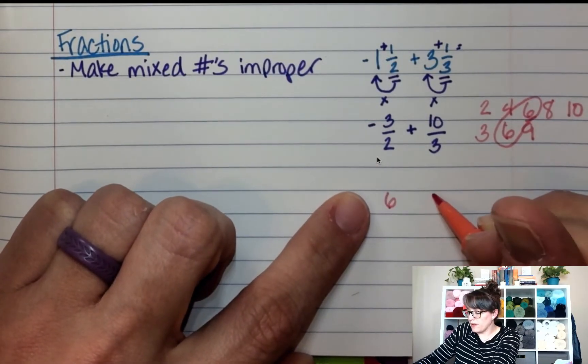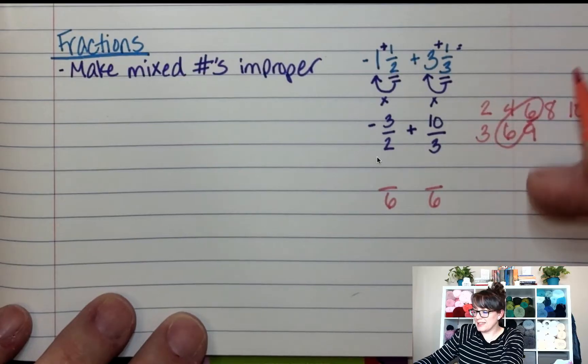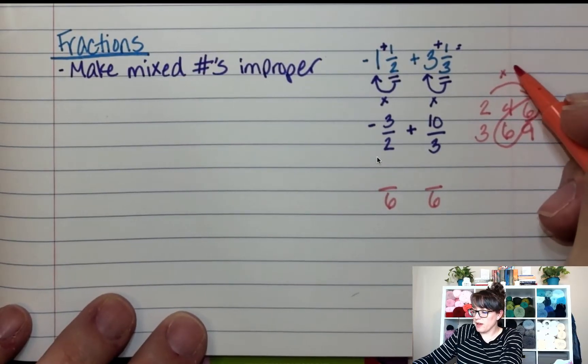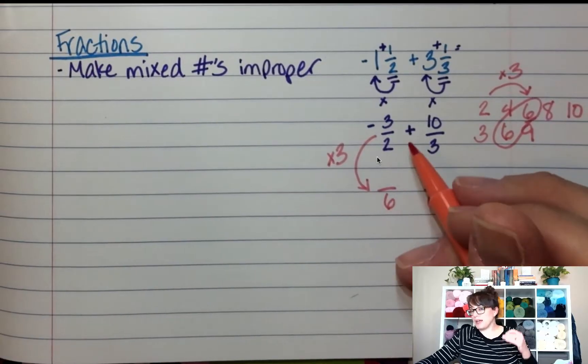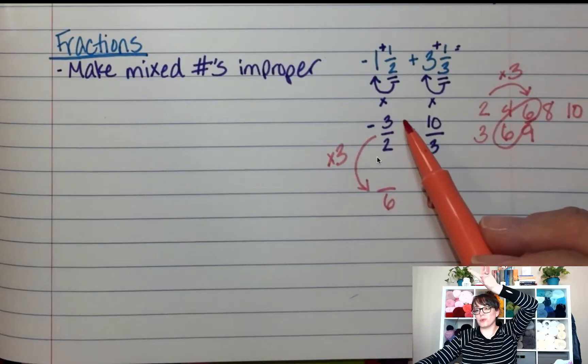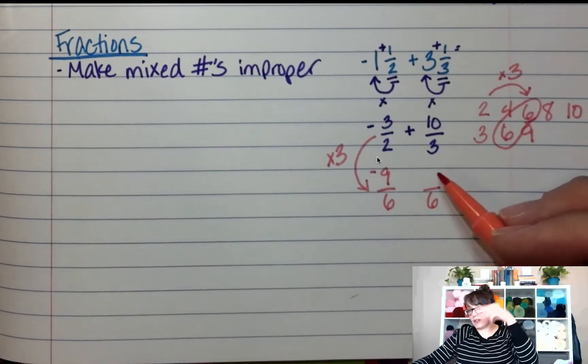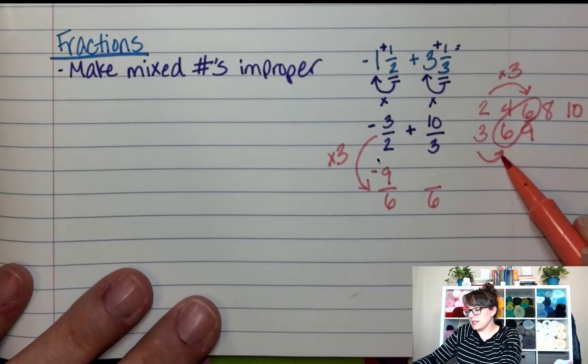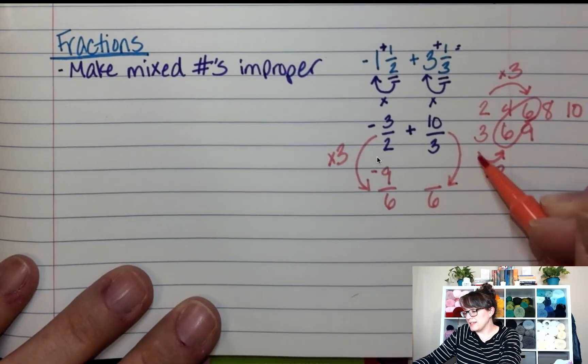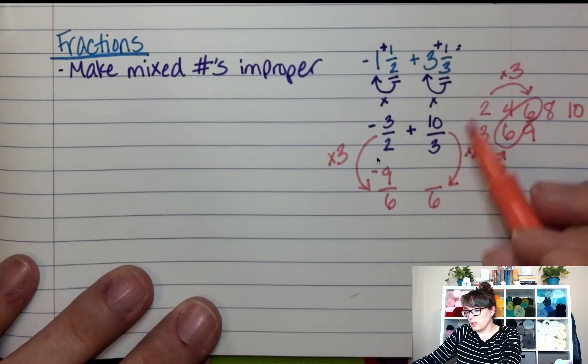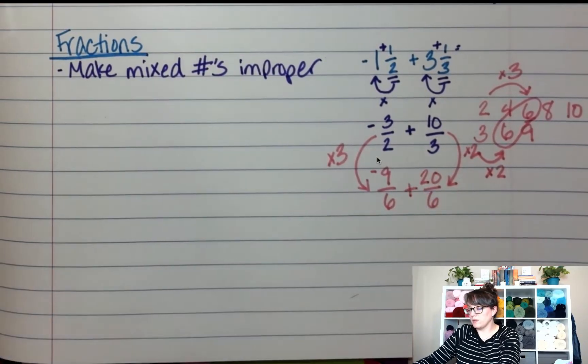So if I wanted to rewrite these two fractions with sixes on the bottom, what did I have to do to the two to get to six? What did we multiply by here? It was by three. So two times three was six. And so if I multiply the two times three to get six, I have to do the three times three to get nine. And this was a negative, so it stays a negative. Now over here with the three, what did we do to the three to get to a six? What did we multiply by? Multiply by two. So if I took this fraction and I double the bottom, I have to double the top two. So three times two is six. Ten times two is twenty. And I'm still adding these two.